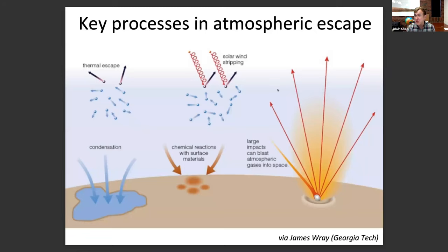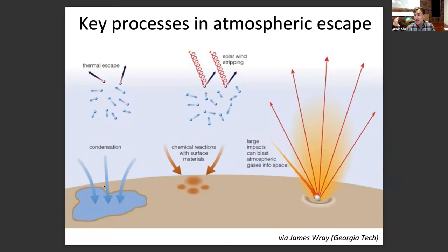Here are some key processes in atmospheric escape — turning a world with a habitability-permitting atmosphere into a bare rock: solar wind stripping, large impacts that can remove the atmosphere, chemical reactions with surface materials drawing down the atmosphere, condensation (carbon dioxide condenses at Mars's poles, water condenses into our oceans), and thermal escape including hydrodynamic loss and boil-off at the top of the planet's atmosphere. You have to track all of these to make a prediction about what worlds have atmospheres and what don't. We shouldn't expect to get it right just by guessing — we're going to need a lot of data to guide us.